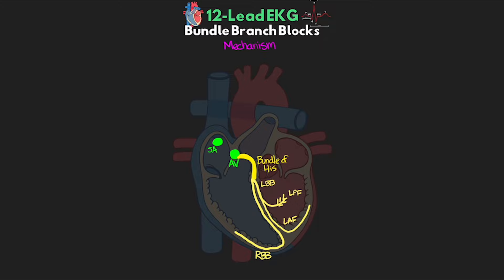With healthy functioning bundle branches, electrical conduction is quickly moved throughout the ventricles into the Purkinje fibers, connecting to cardiac myocytes and leading to rapid synchronized depolarization and forceful contraction. Once we block one of these branches, the affected areas no longer receive conduction quickly. For example, blocking the right bundle branch means the right ventricle won't rapidly depolarize while the left still does. Depolarization then passes cell to cell slowly, resulting in loss of ventricular synchrony and prolonged depolarization — both contributing to a drop in cardiac output.